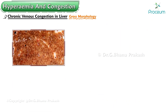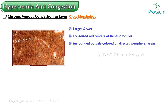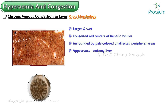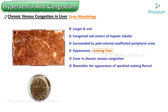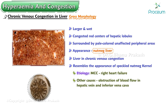Gross morphology: the liver is larger and wet. The cut section shows congested red centers of hepatic lobules surrounded by pale, unaffected peripheral areas — an appearance known as nutmeg liver. The term 'nutmeg' refers to the resemblance of the liver to a speckled nutmeg kernel. The most common cause is right heart failure; other causes include obstruction of blood flow in the hepatic vein and inferior vena cava.